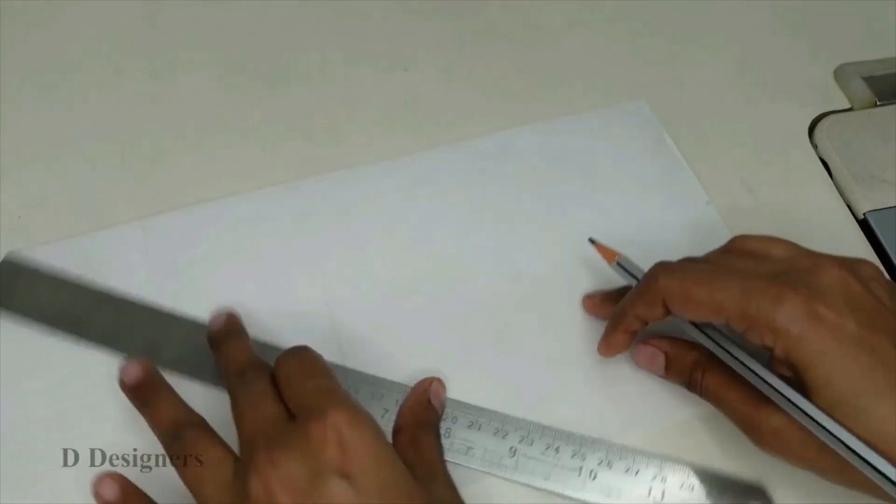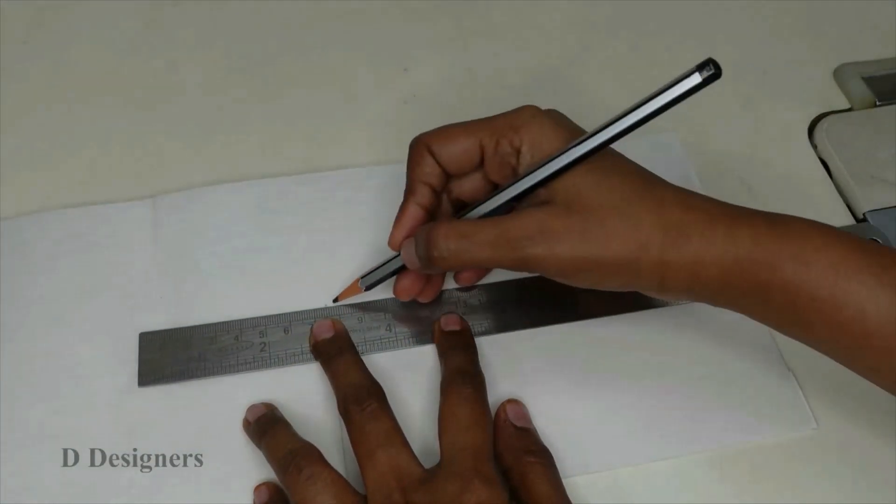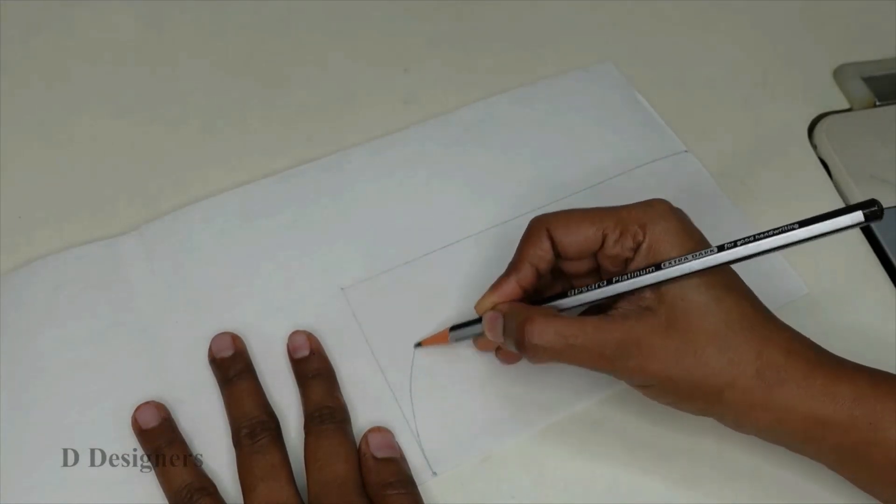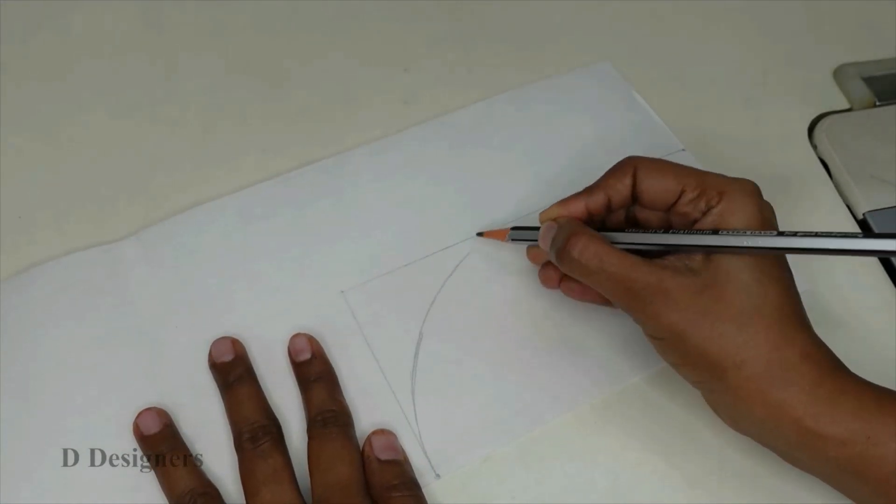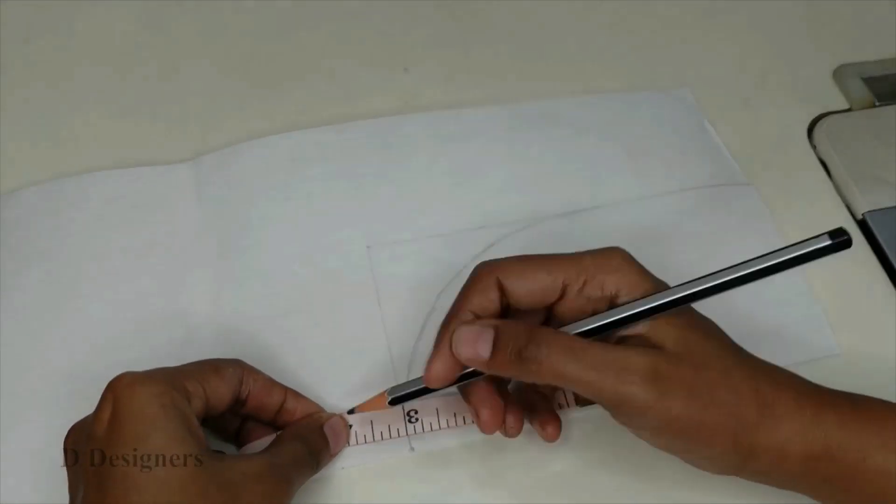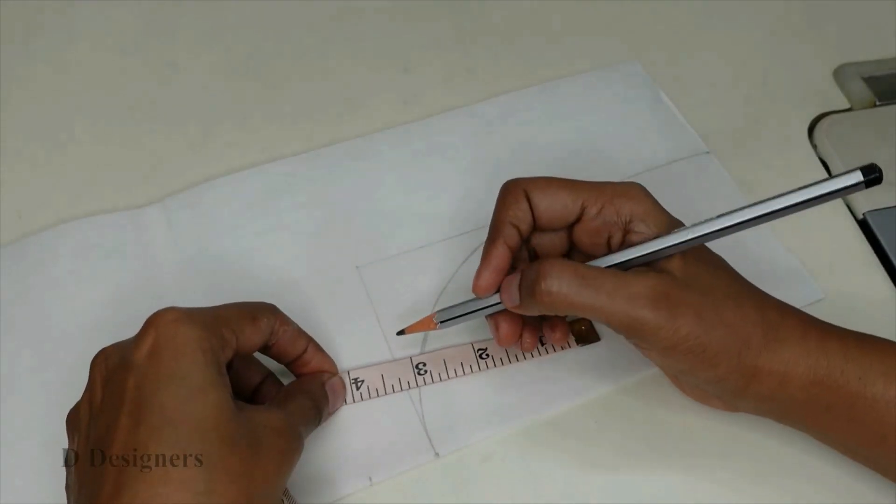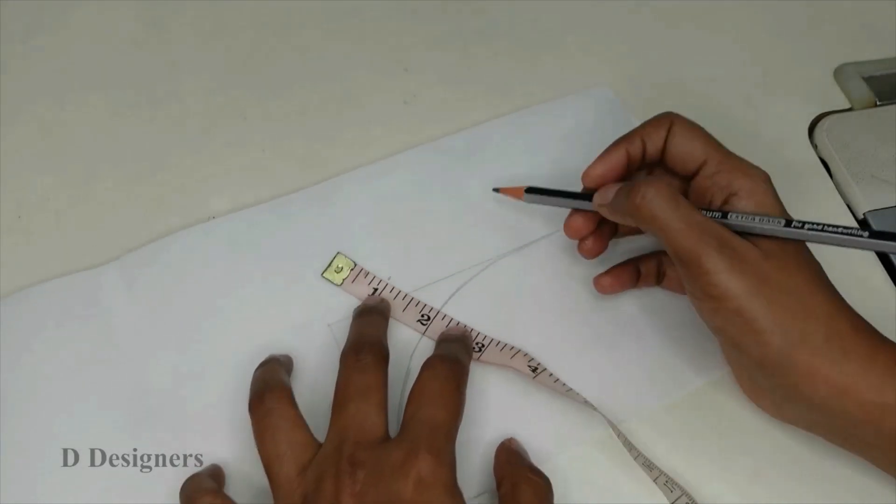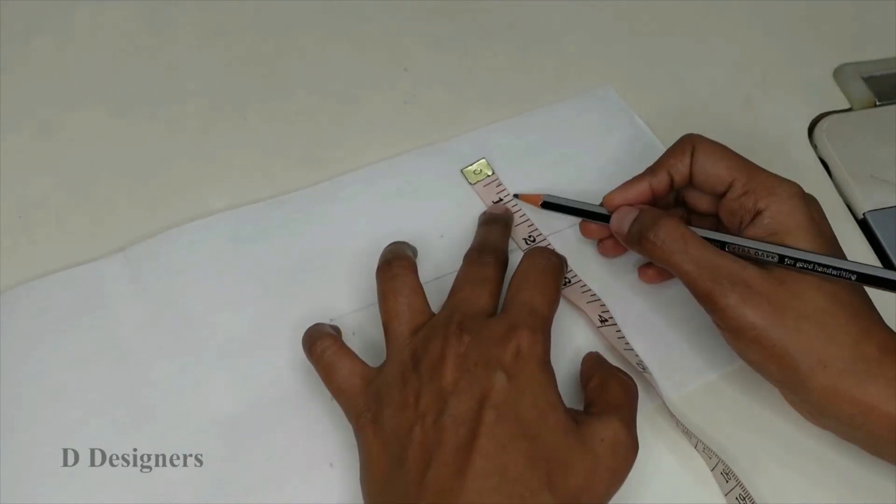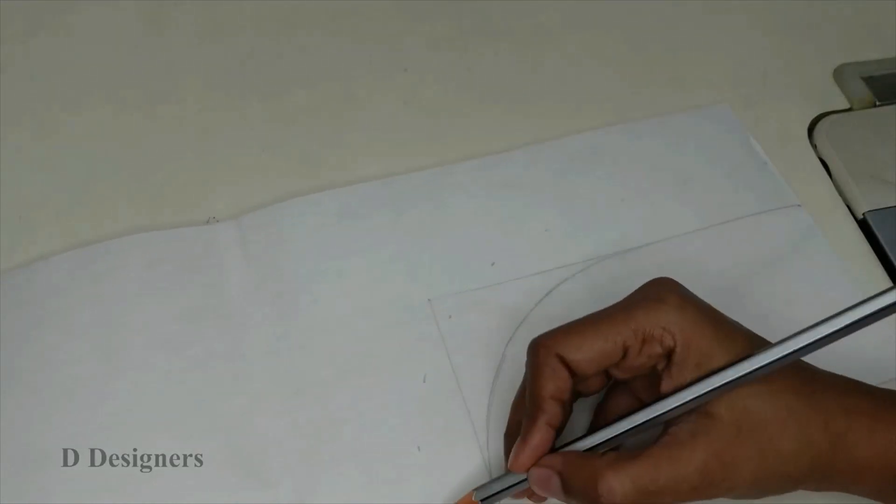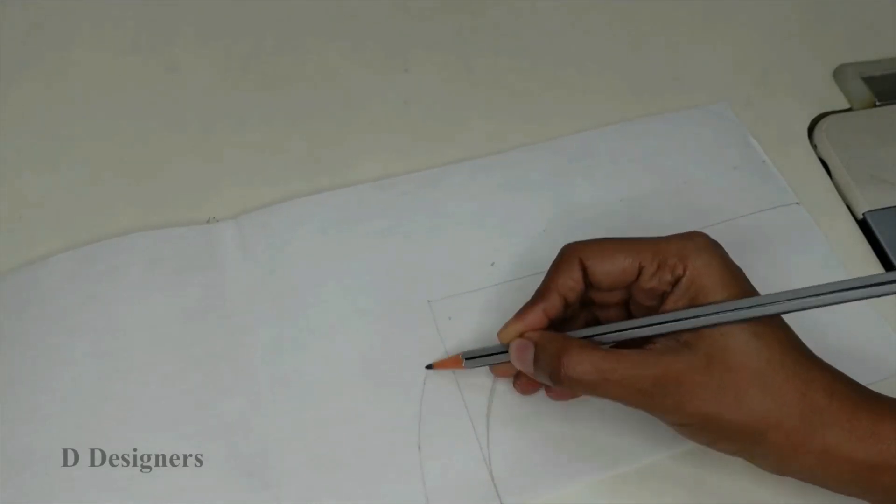Here I am going to mark the round shape for the neckline. Again mark 1 inch outside the neckline. Now connect these points and mark the shape.